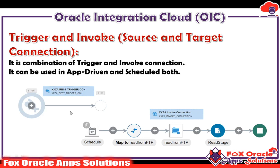Finally, we have the trigger and invoke type of connection. It is a combination of both trigger and invoke connections. When we create a trigger and invoke connection, we can use it to initiate the integration as well as to call other web services — we can use it in both ways. So if we require a connection that can be used both at the initiation point and anywhere in the integration to call other web services, we create that connection as a trigger and invoke connection. It can be used in both app-driven and schedule integration.